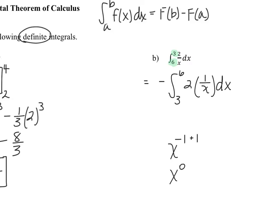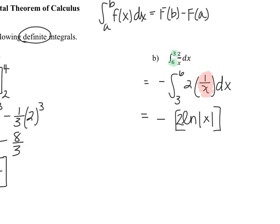We have to have the antiderivative of 1 over x memorized — this is one we should recognize. The antiderivative of 1 over x is the natural log of the absolute value of x. So keeping the negative on the outside, the antiderivative is 2 times the natural log of the absolute value of x, evaluated from 3 to 6. Substituting in 6 gives 2 times the natural log of 6, and substituting in 3 gives 2 times the natural log of 3.